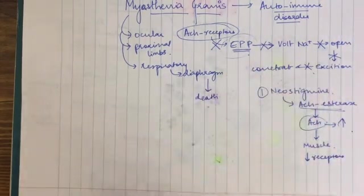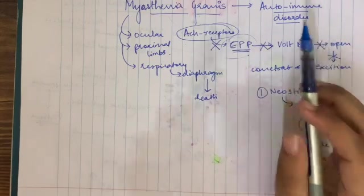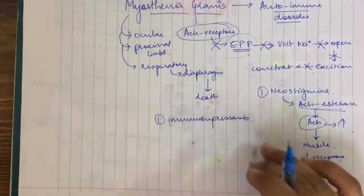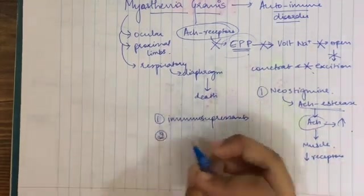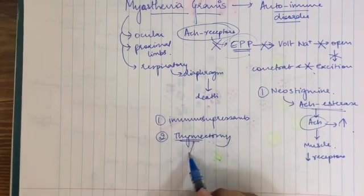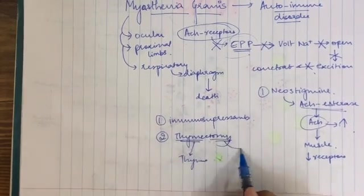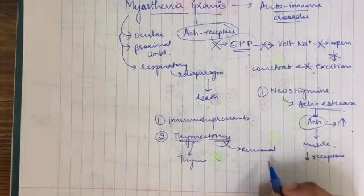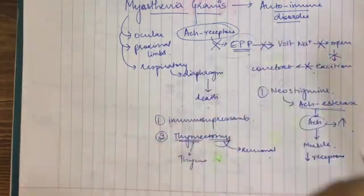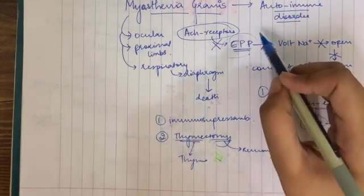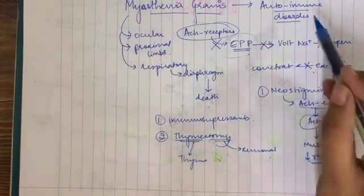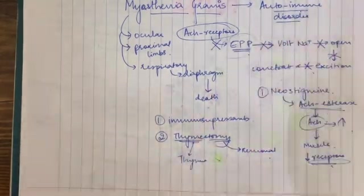Another way we can think about this is — since it's an autoimmune disorder, what if we suppress the immune system itself? Immunosuppressants can be administered to the patient, or a very effective cure is thymectomy. Thymectomy, as the name suggests — thyme referring to thymus, ectomy meaning removal — removal of the thymus will reduce the immune system activity, suppressing the production of antibodies. Hence, thymectomy prevents antibody generation against the acetylcholine receptors, and this autoimmune disorder can be normalized.